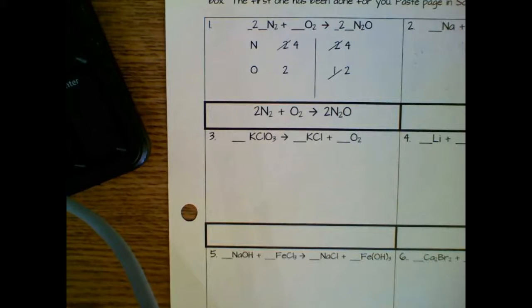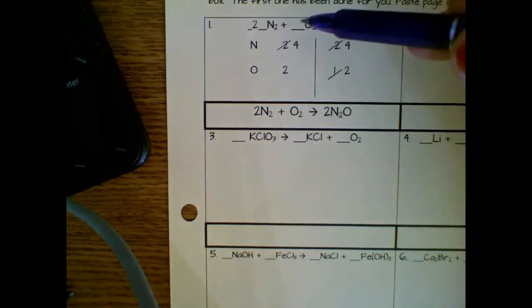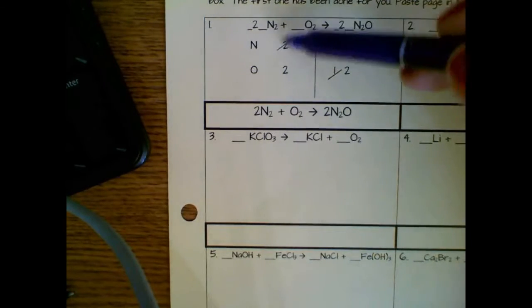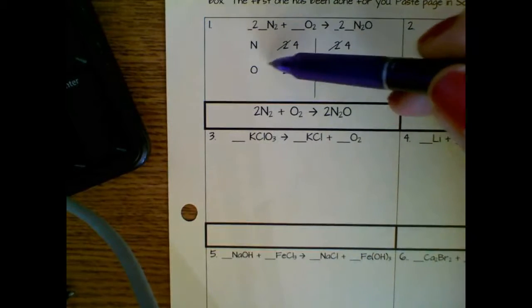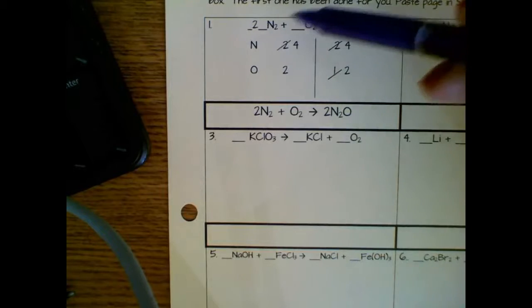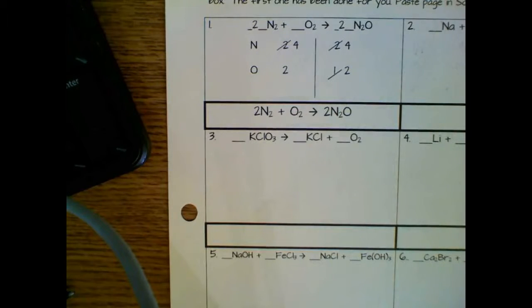So I'm going to show you a method of balancing chemical equations. There is a method given to you as an example here in terms of the numbers of N on this side and this side, the number of O on this side and this side, and then cross out the numbers as they update the coefficients. I'm going to show you a slightly different method.